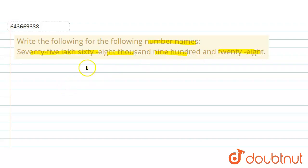So we will write in the form of number names. Here, in the form of numbers, first given as 75 lakh 68 thousand, so seventy-five lakh, we will write here seventy-five lakh.